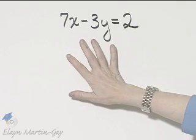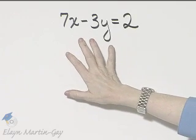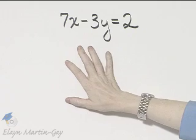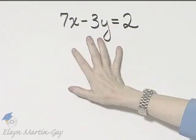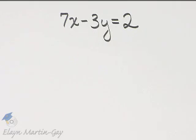We want to find the slope and the y-intercept of the graph of this equation, so we write it in slope-intercept form. That means solve this equation for y.